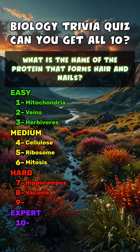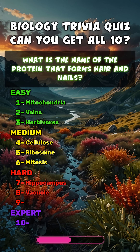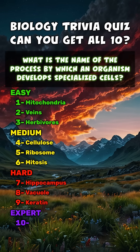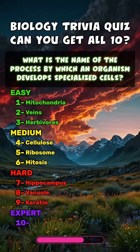What is the name of the protein that forms hair and nails? What is the name of the process by which an organism develops specialized cells? Differentiation.